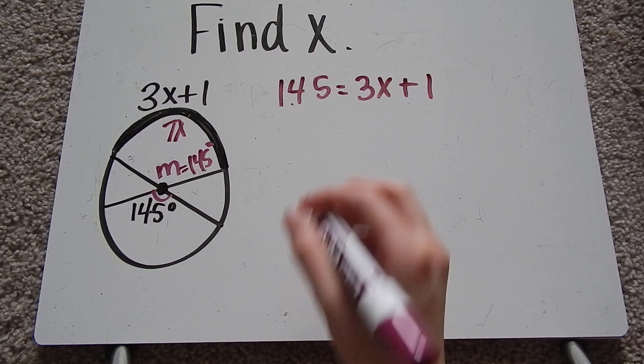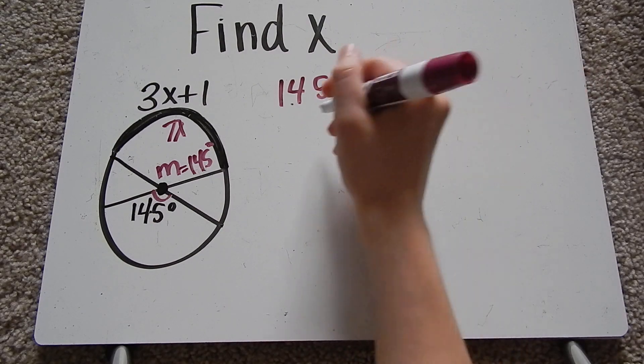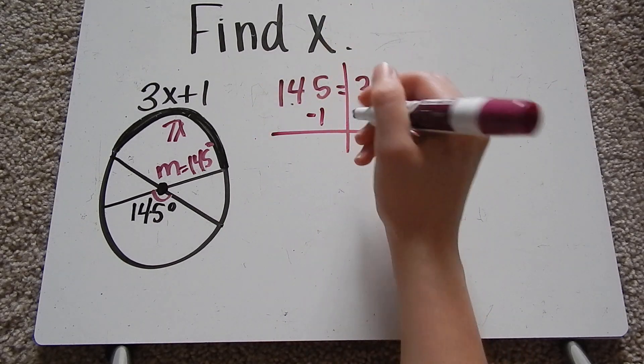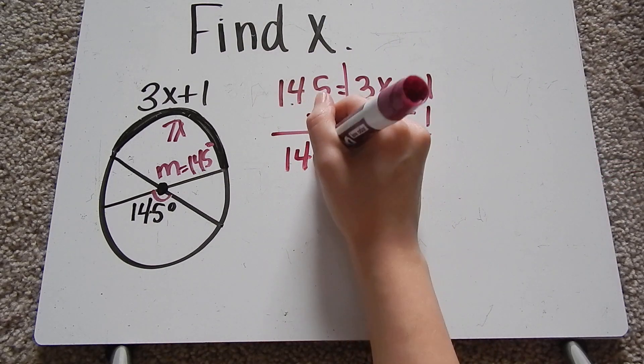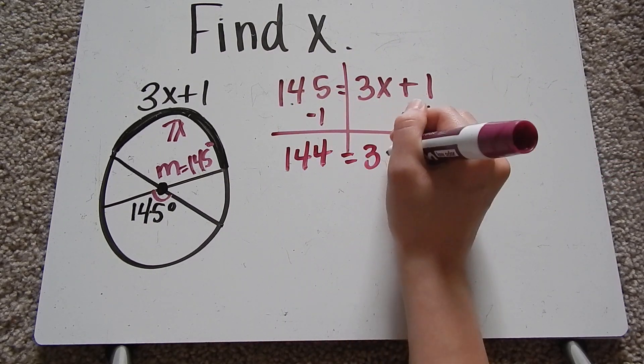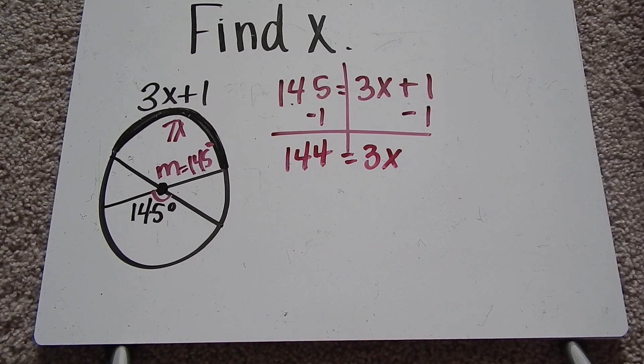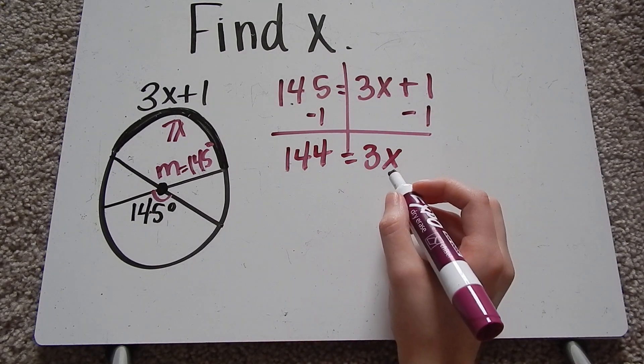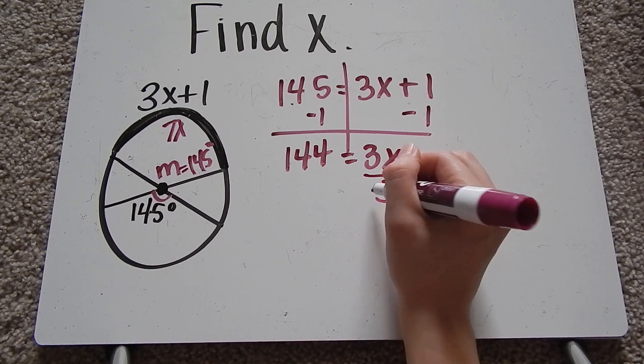Now we can solve for x. So I first want to subtract 1 from both sides and I get 144 equals 3x. Once I get there, I want to get x by itself, so I divide both sides by 3.